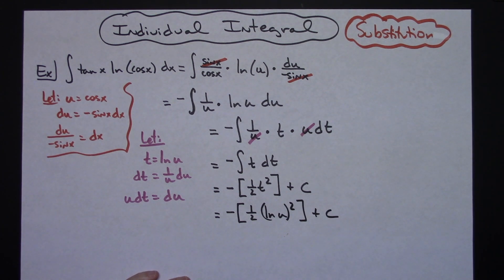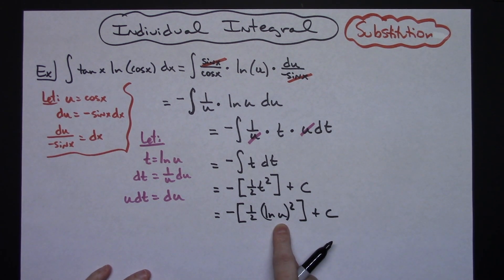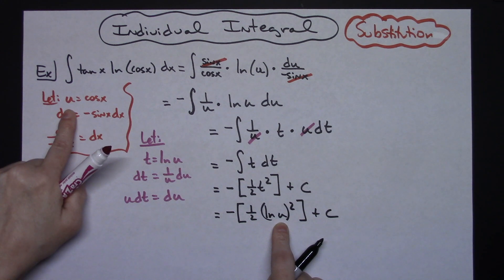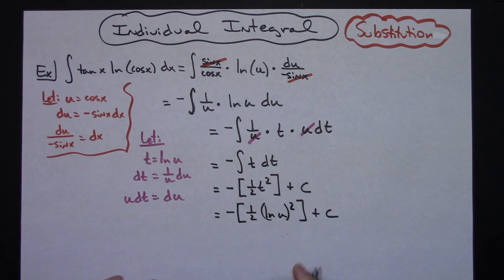And then plus c. Okay, still not done. Got to go back and figure out what my u was. My u is cosine x. So I'll have a negative 1 half natural log replacing u with cosine of x.